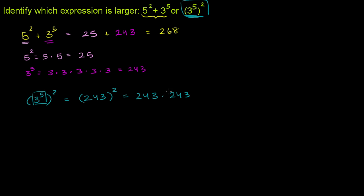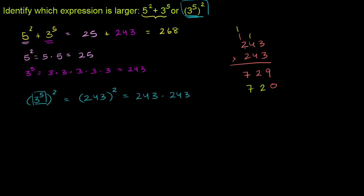And if you're curious, you want to know what that number is, we can solve it. So if we do 243 times 243: 3 times 3 is 9. 3 times 4 is 12. 3 times 2 is 6, plus 1 is 7. Put a 0 down here. Let me do this in a different color so we don't get confused. 4 times 3 is 12. 4 times 4 is 16, plus 1 is 17. 4 times 2 is 8, plus 1 is 9. Now let's do this last row. We have the 2's — put two 0's here. 2 times 3 is 6. 2 times 4 is 8. 2 times 2 is 4.